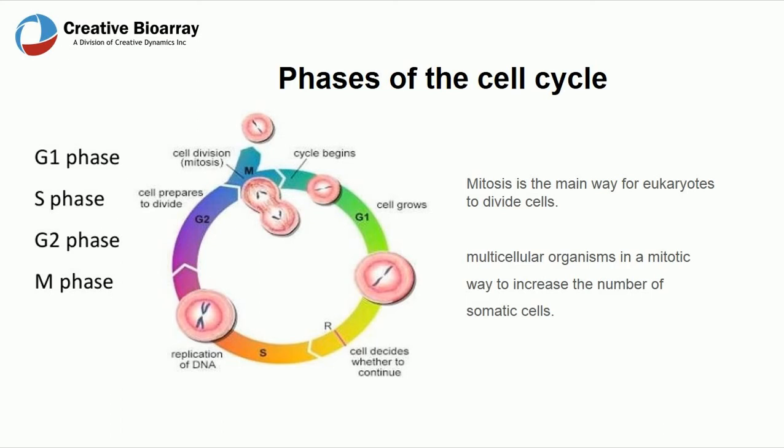Mitosis is the main way for eukaryotes to divide cells; multicellular organisms use mitosis to increase the number of somatic cells. Somatic cell mitosis is cyclical — that is, it follows the cell cycle. The phases of the cell cycle include G1 phase, S phase, G2 phase, and M phase.